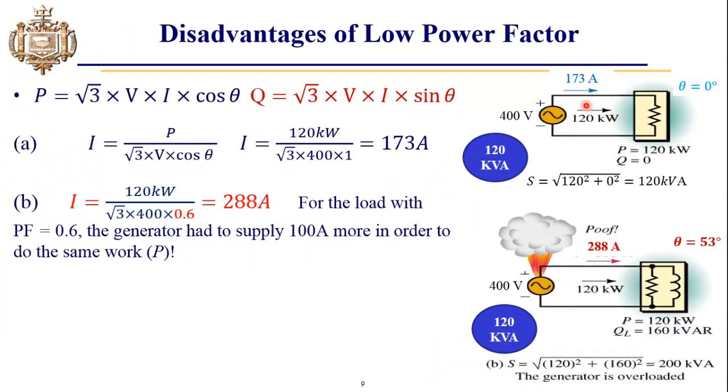I am interested in finding how much current will this load be drawing from this generator. This is the formula for the real or useful power, which is equal to √3 times line-to-line voltage and line-to-line current multiplied by power factor, which is cos θ. In the purely resistive circuit we have θ equal to 0, so whenever we put θ equal to 0, the cos θ comes out to be 1.